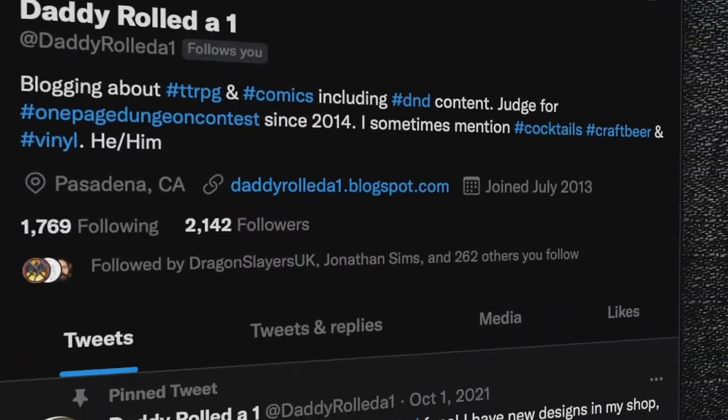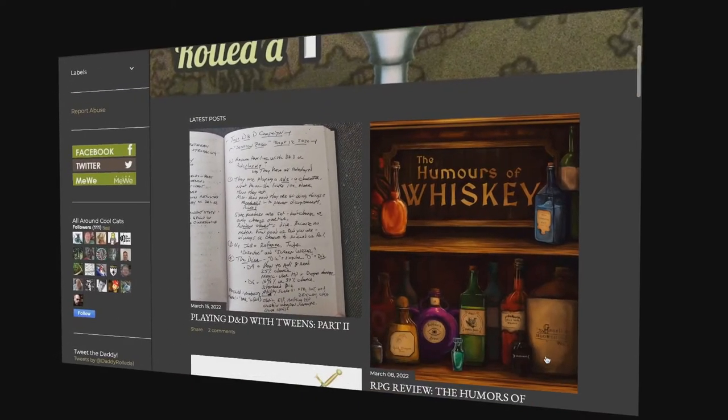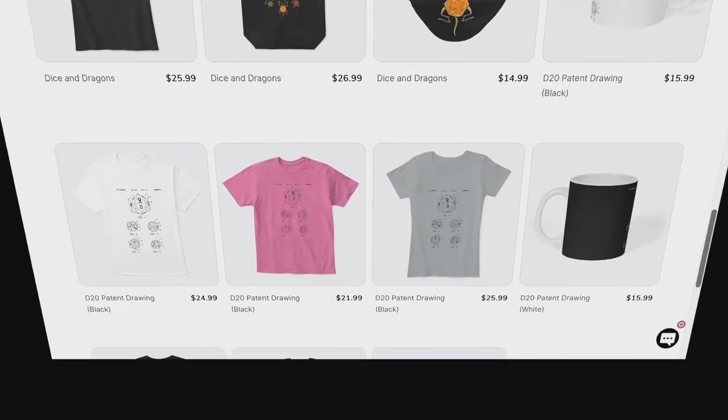I need to give a shout out to my sponsor, DaddyRolled1, who created this wonderful t-shirt featuring a D20 fighting off some vicious dice goblins. DaddyRolled1 is a fantastic follow on Twitter. He also blogs about his experiences in running various role-playing games. But more importantly, he has a web store. And if you go to his store, you can find designs like this one, including many others for t-shirts and other merchandise.